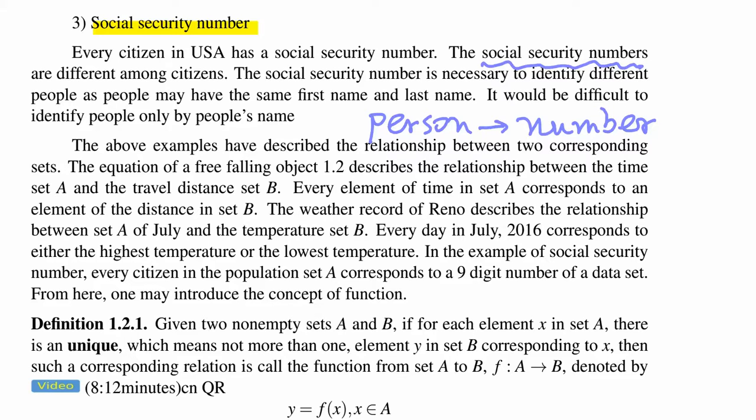And for each person, the social security number again is unique. For one person, this person cannot have two social security numbers. So that means for each person, there is a unique one, not more than one social security number.